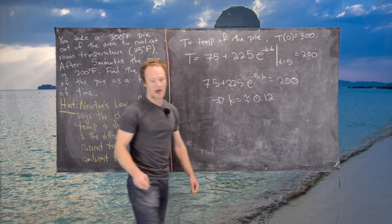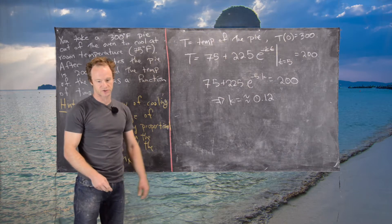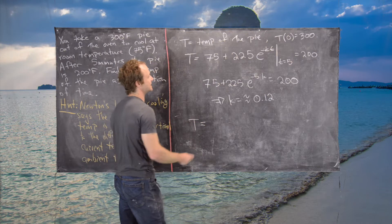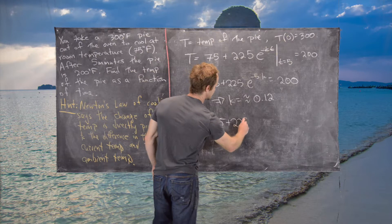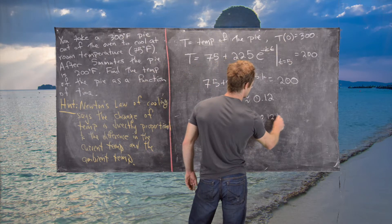That's our proportionality constant for the differential equation. Our final solution is T = 75 + 225e^(-0.12t).